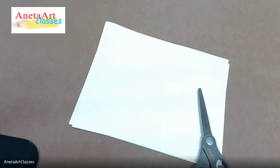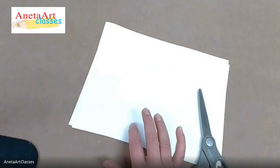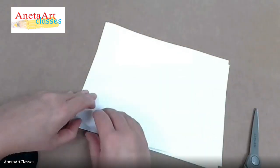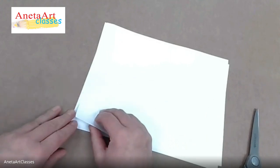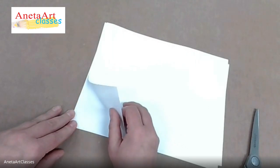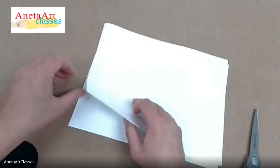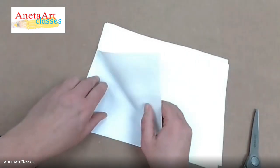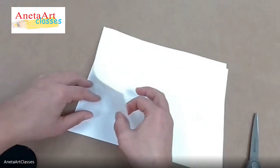For this project you need printer paper and scissors. For a snowflake you need to have a perfect square shape, and now I'm going to show you how to make a square out of a rectangle shape. Grab this corner.